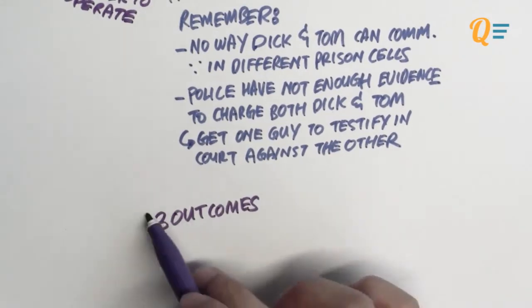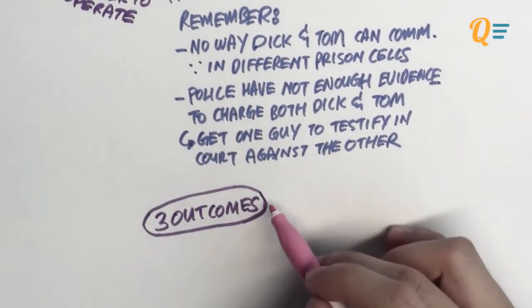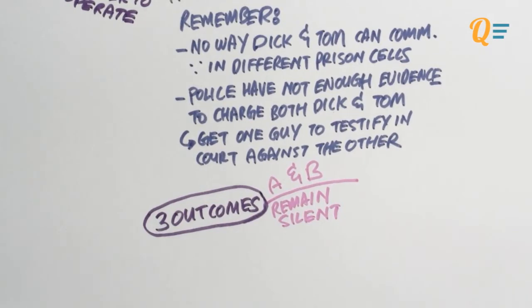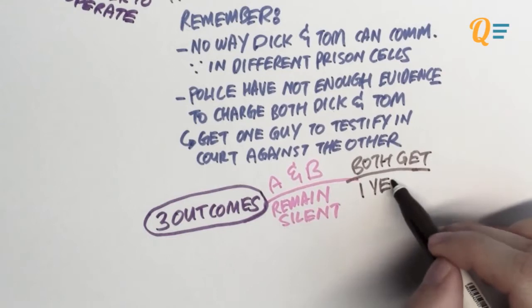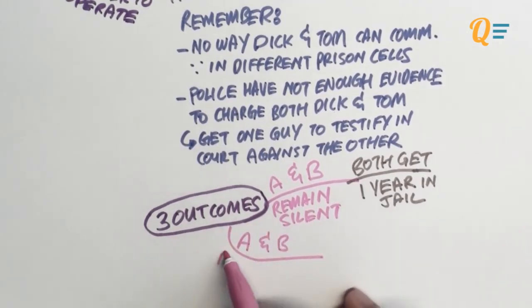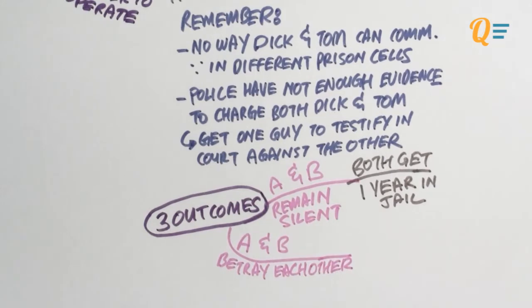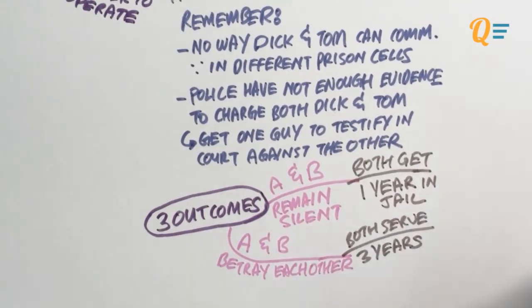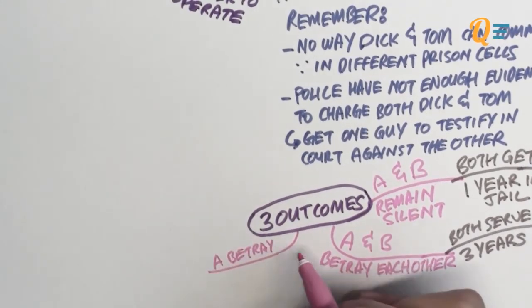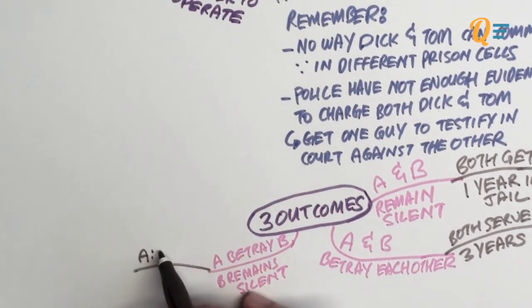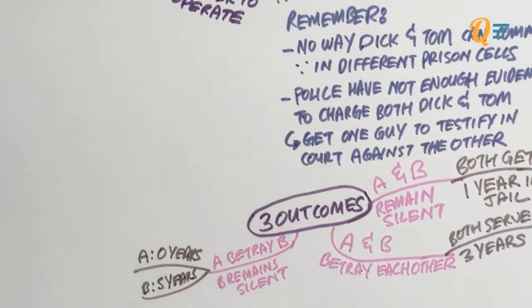So the police had an idea: get one of them to testify in court against the other to close the case. There can be three different outcomes. If both Dick and Tom remain silent, both get one year in jail — they're just suspects. If both betray one another, both are served three years in prison. And if one betrays the other — say A betrays B and B remains silent — A spends zero years in prison and B spends five years in prison.